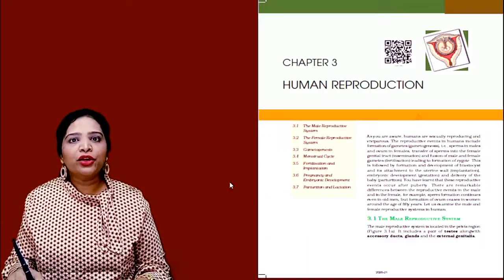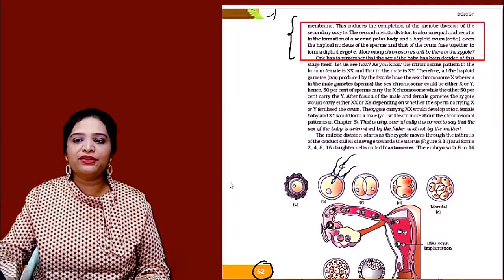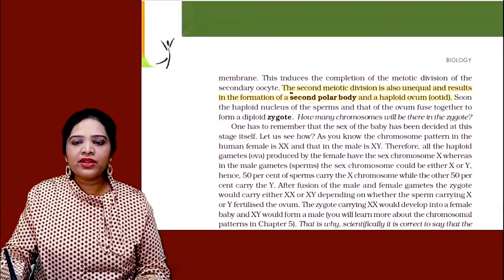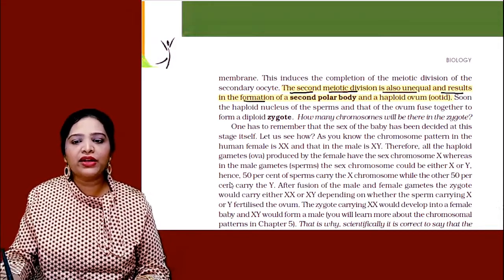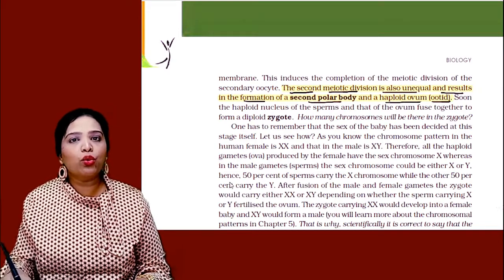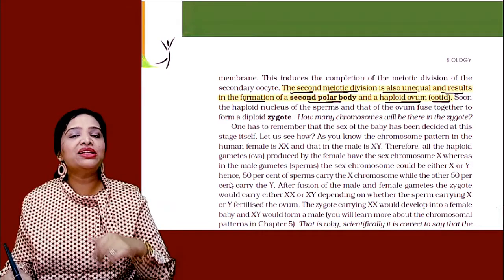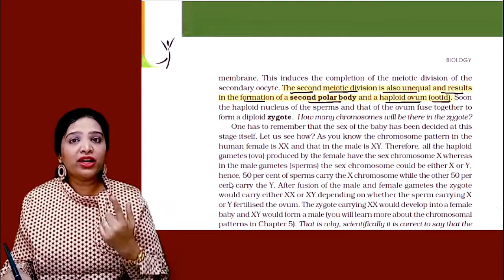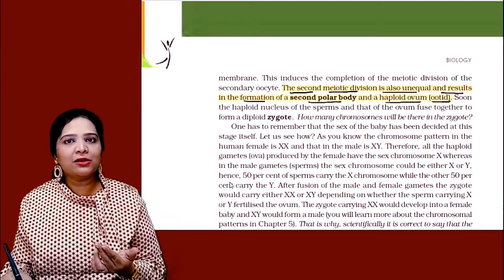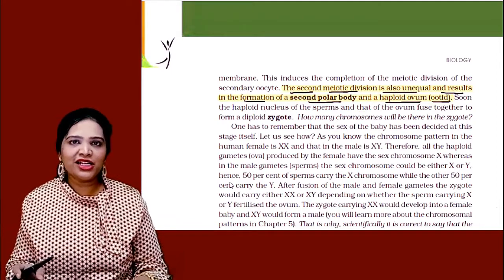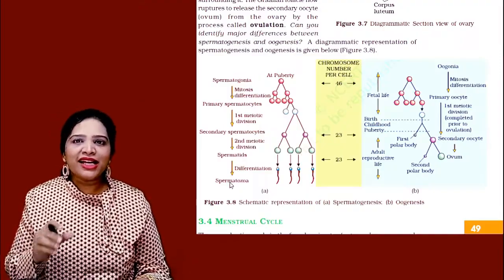This question is taken from the Human Reproduction chapter. If you go to page number 52, the first paragraph states: the second meiotic division is also unequal and results in the formation of the second polar body and haploid ovum — the oocyte. So the second polar body forms after the second meiotic division, which occurs after the sperm enters, because the sperm brings the centriole.